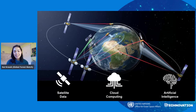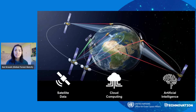Since satellites are always taking pictures of the Earth, it's necessary to use a combination of cloud computing and artificial intelligence to put all of these images together and identify if these images are showing forest or some other type of land cover.